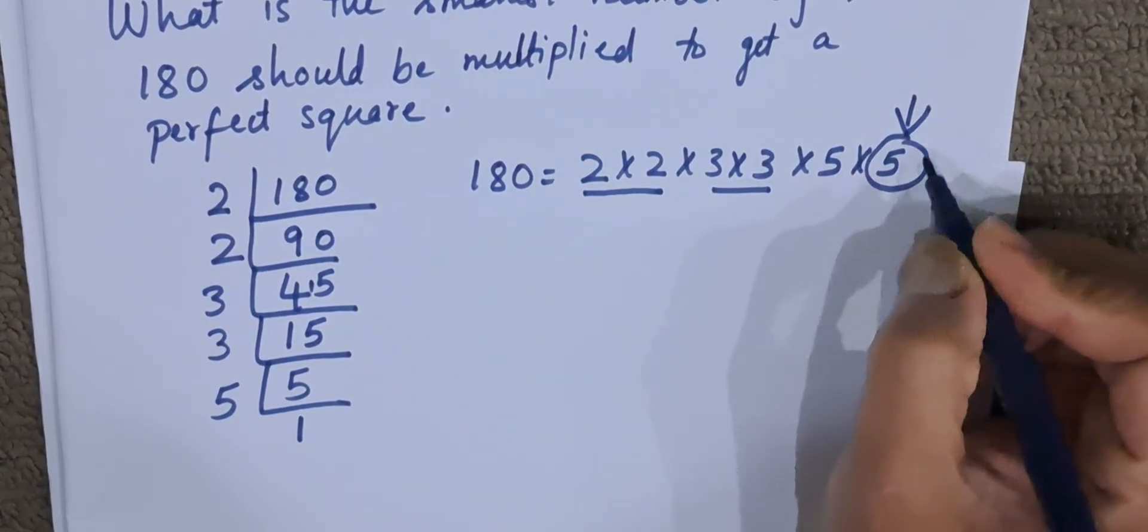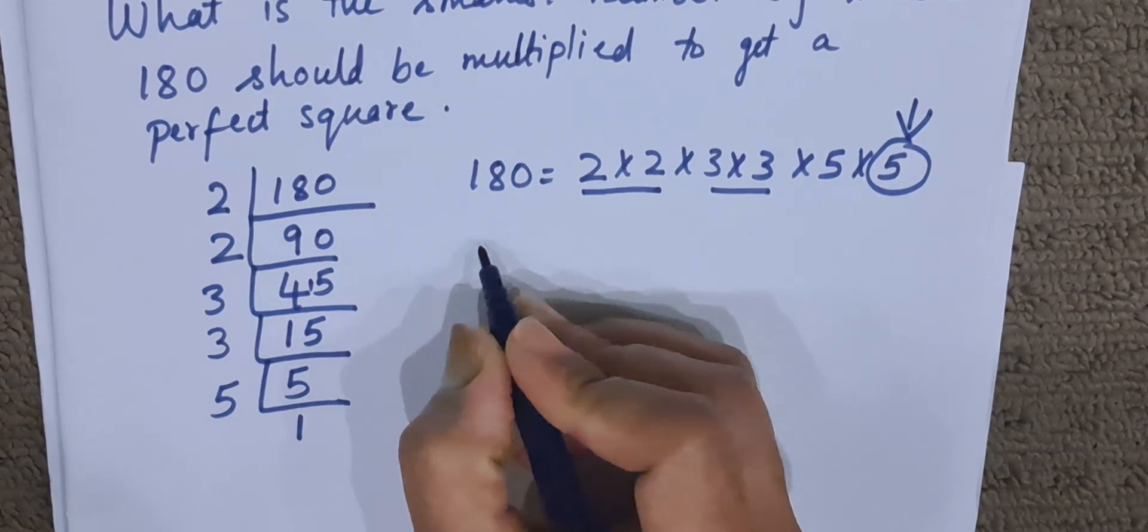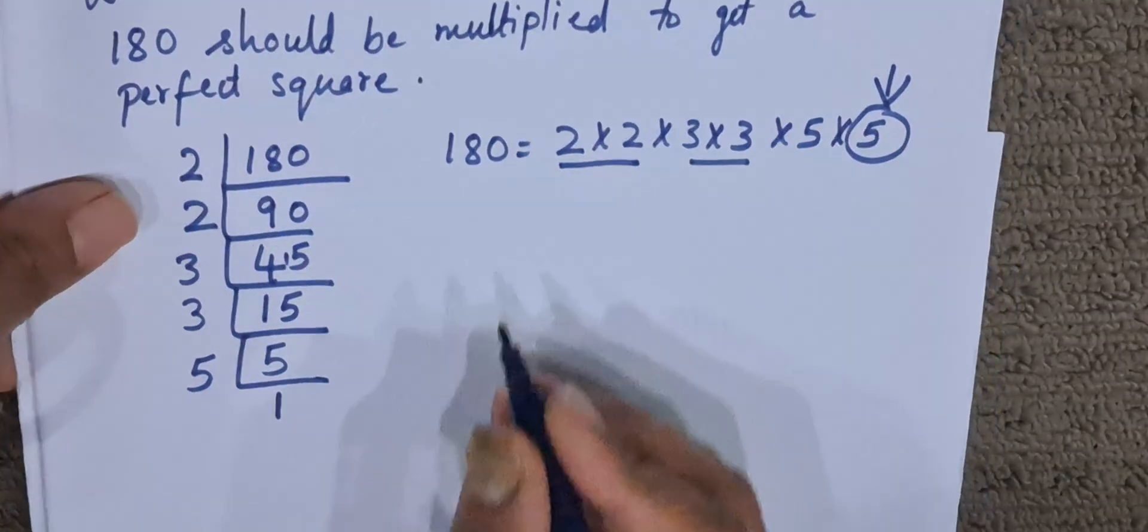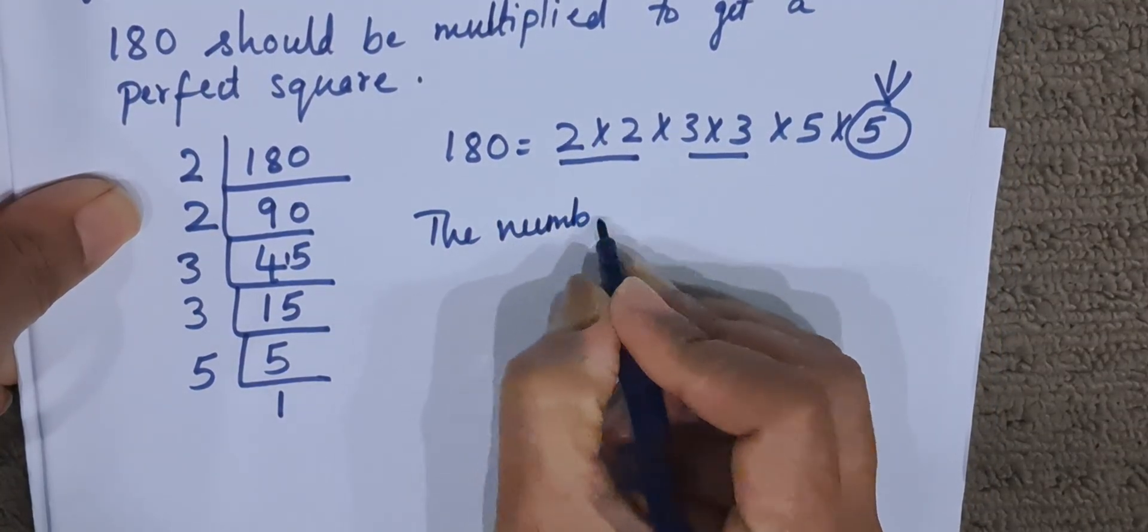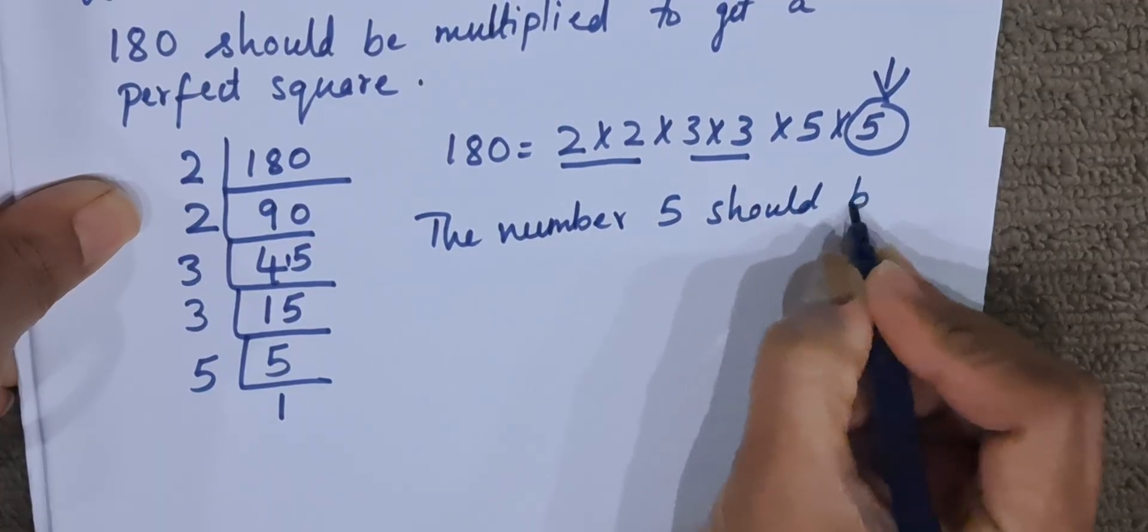So this has to be multiplied with 5. We will write down the answer. What is the smallest number by which 180 should be multiplied? The number 5 should be multiplied.